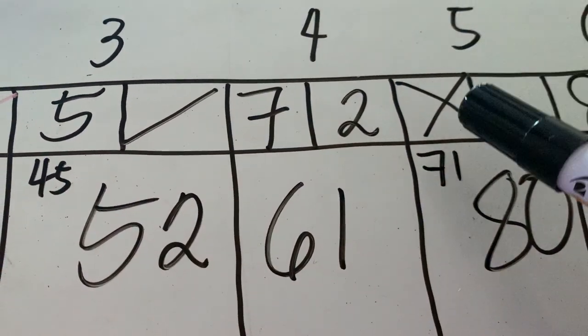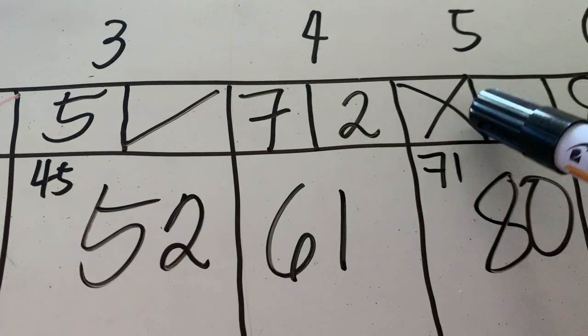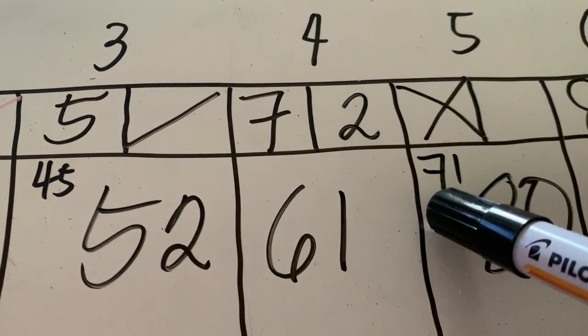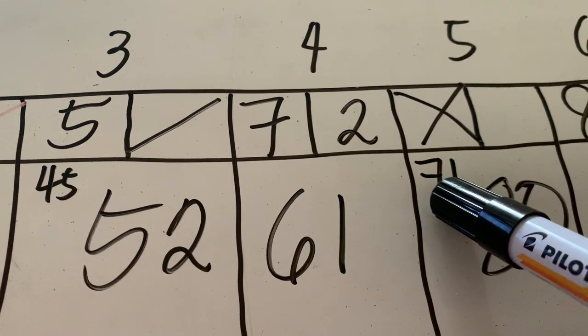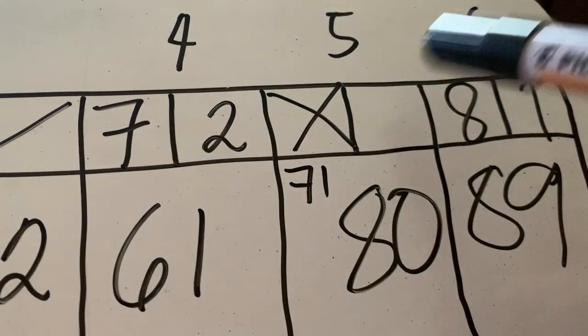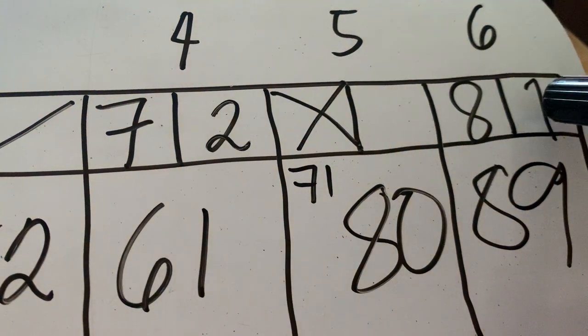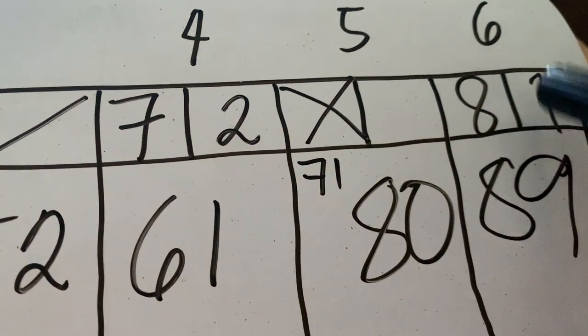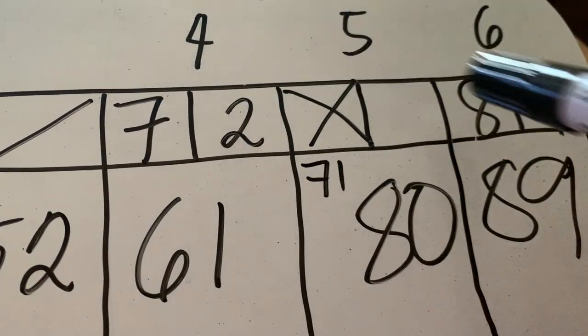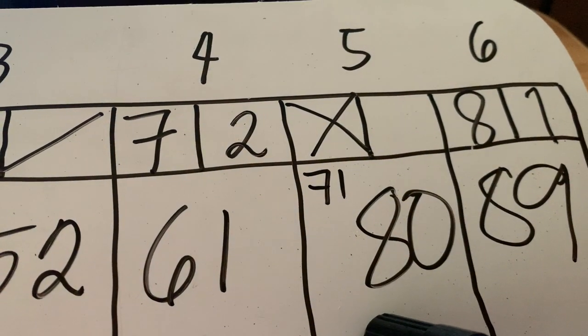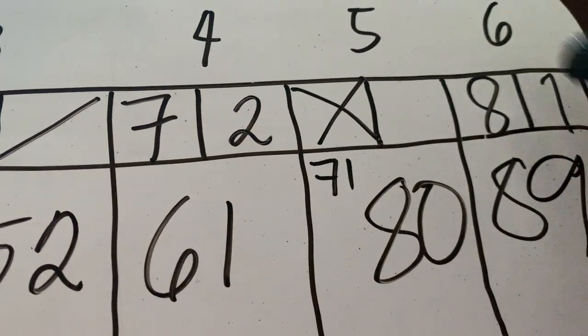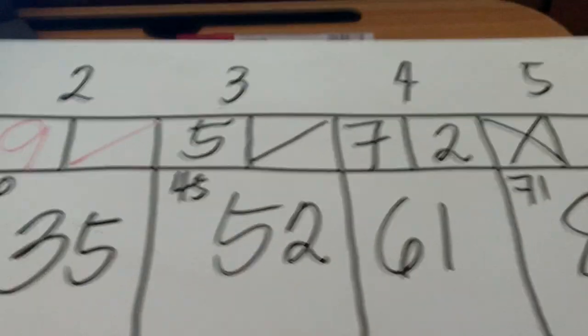On the fifth frame, Jack scored a strike. So strike is equivalent to 10 points. So 61 plus 10 is equal to 71. We will still wait for the two remaining attempts on the next frame so that we can add it and have the score. So 71 plus 9, because of the two attempts, because of the strike, we will have 80. So this one, no marks. 80 plus 9 is 89. So this will be your score on the sixth frames.